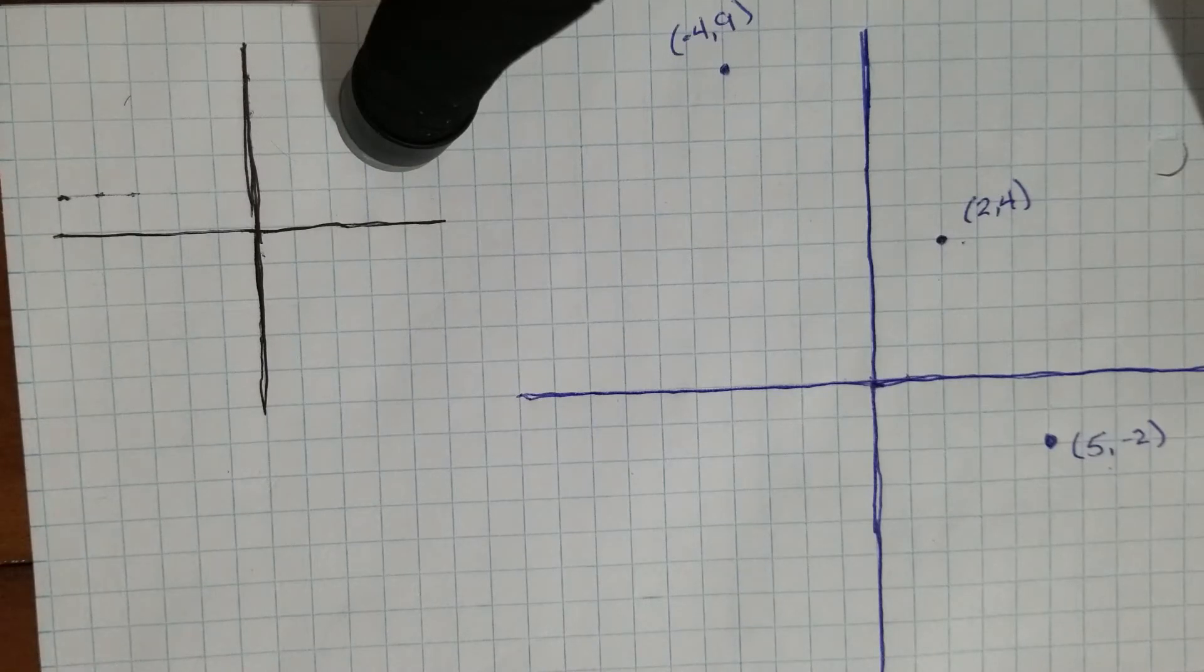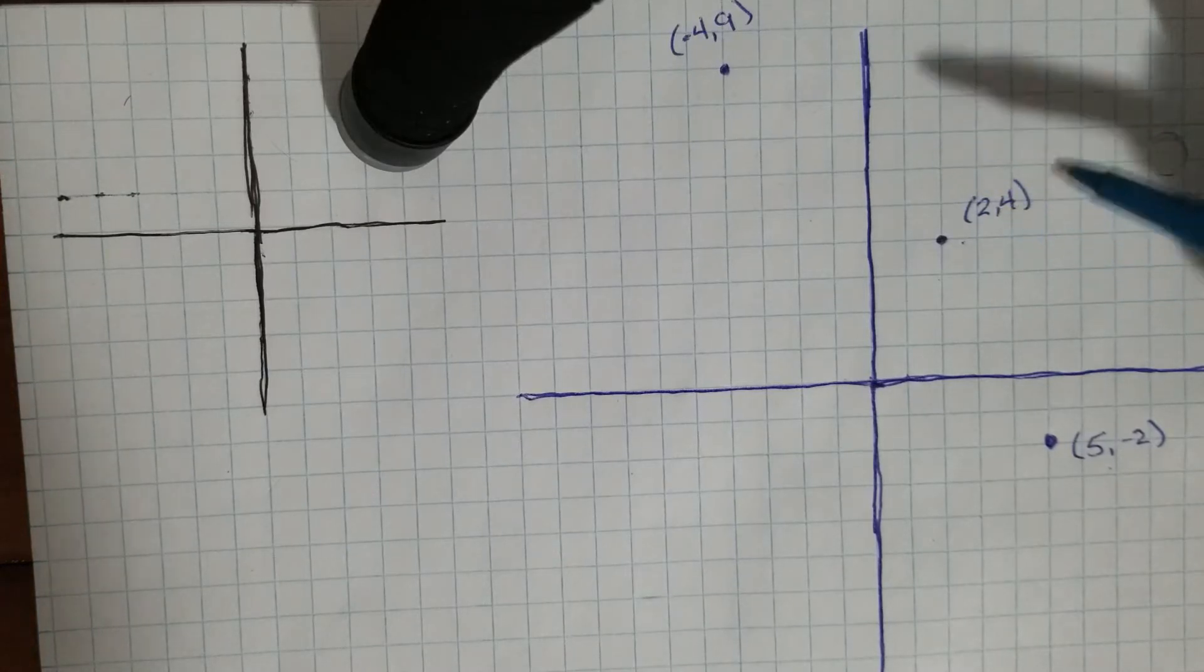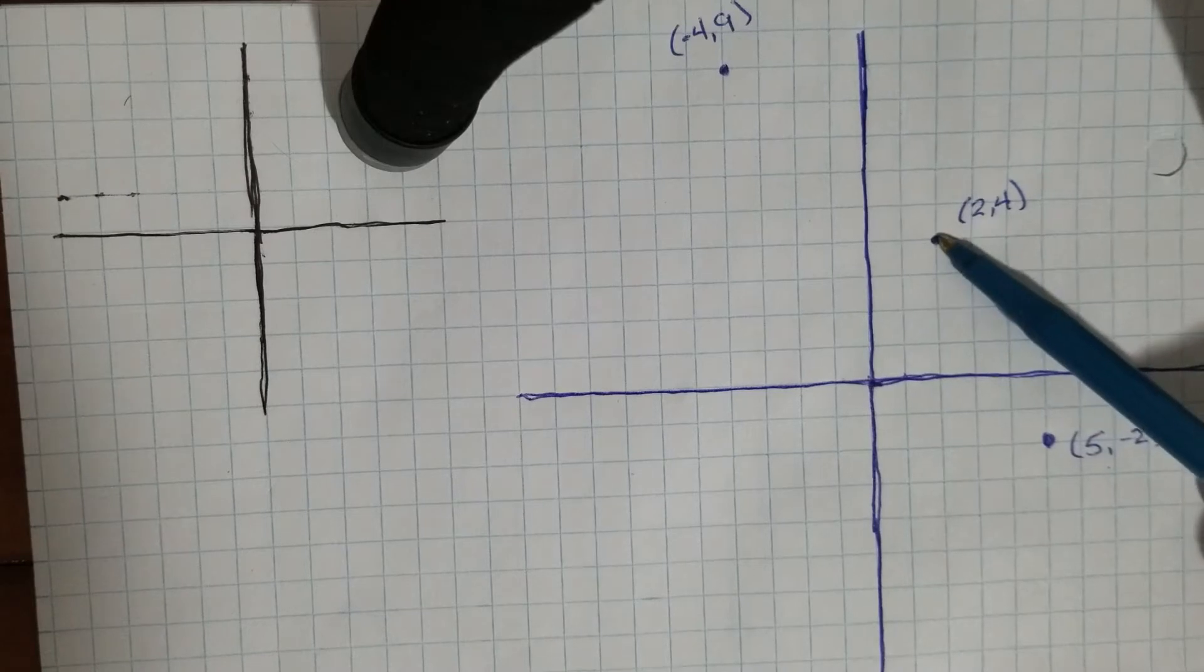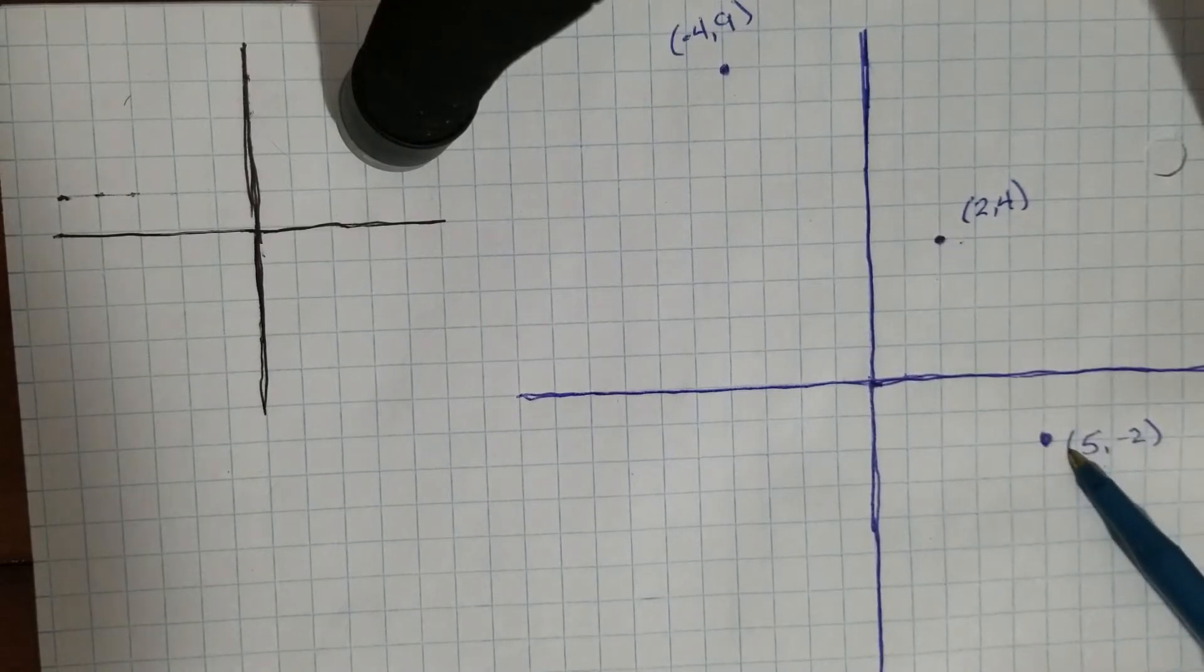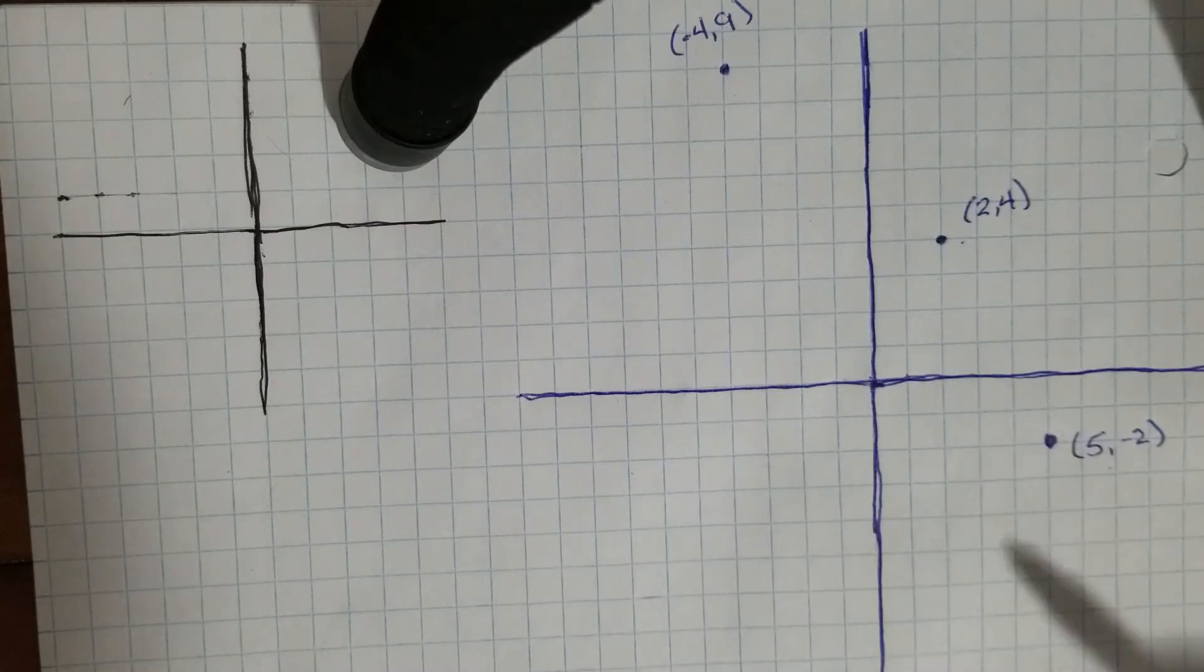First it asks to describe the translation. So we have to figure out for part A, describing the translation is figuring out how we get from this point here to this point here. Now there's two ways that you can do it. I'm showing you on a graph, but I'll also show you in a minute how to do it with just the coordinates.